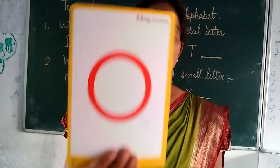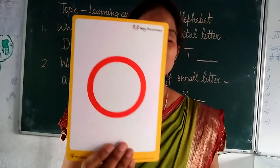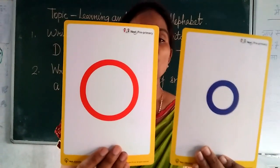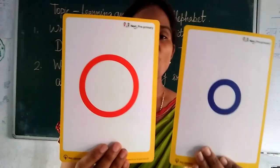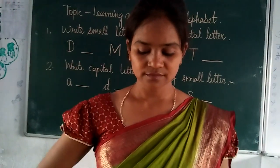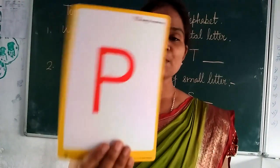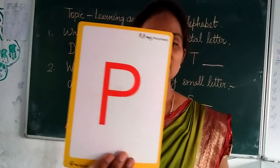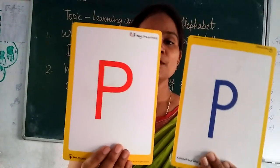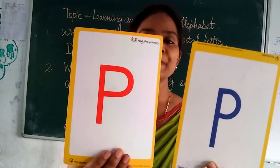Capital O. Small O. O for orange. Capital P. Small P. P for parrot.